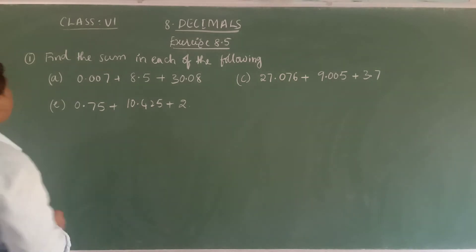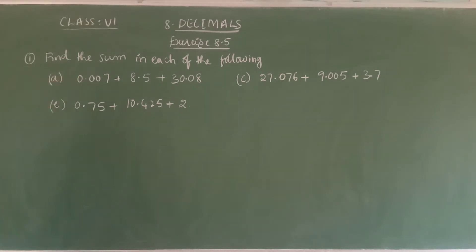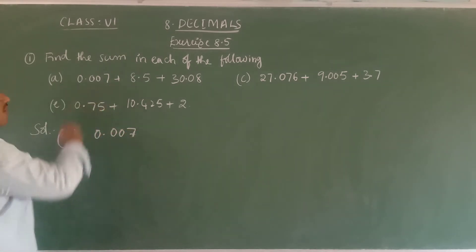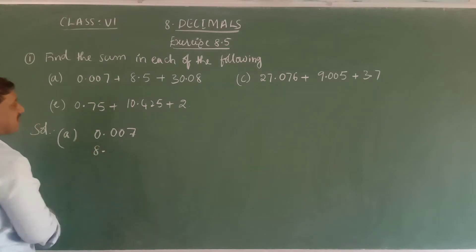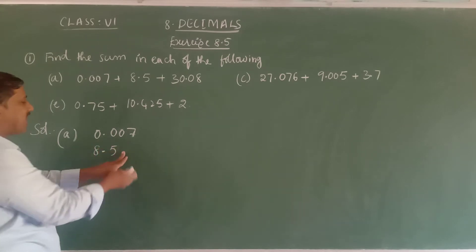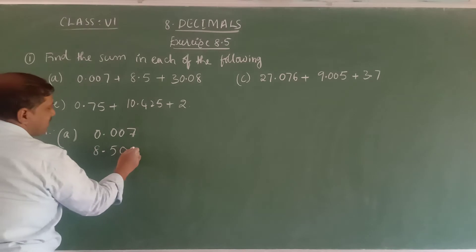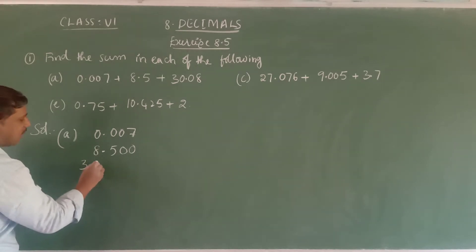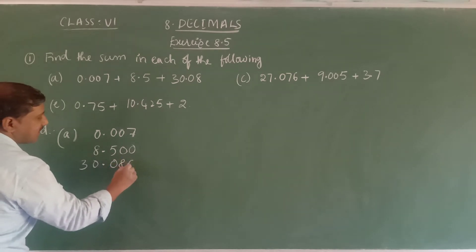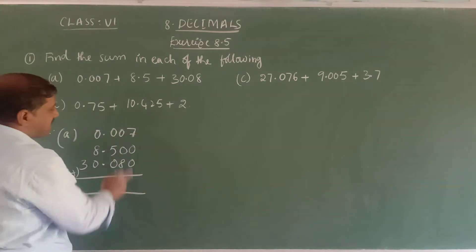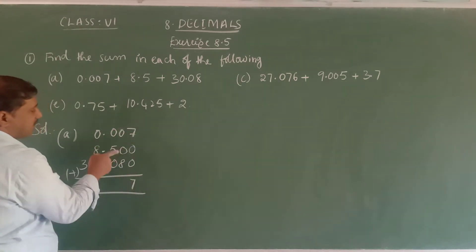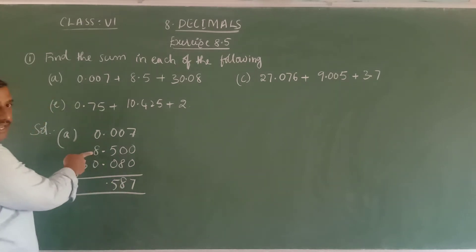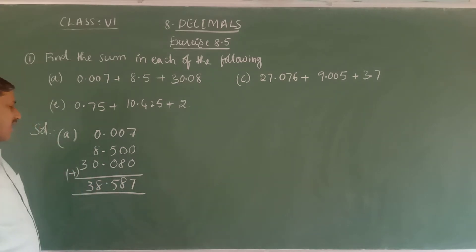Now we will discuss exercise number 8.5. The first question, part A: find the sum of 0.007 + 8.5 + 30.08. Writing digits at correct places: 8 under ones, 5 under tenths, 0 under hundredths, 0 under thousandths for 8.5; and 30.08 with 0 under ones, 3 under tens, 0 under tenths, 8 under hundredths. Adding from right: thousandths 7, hundredths 0 + 0 + 8 = 8, tenths 5, ones 8 + 0 = 8, tens 3. The answer is 38.587.